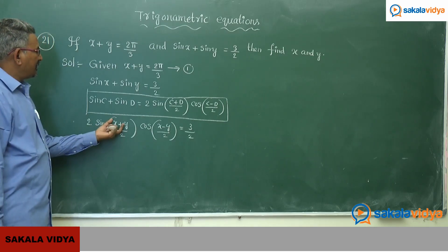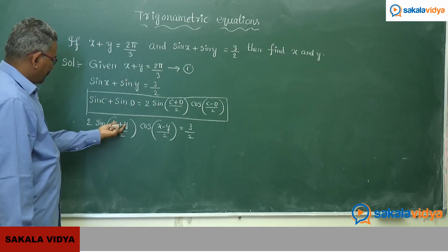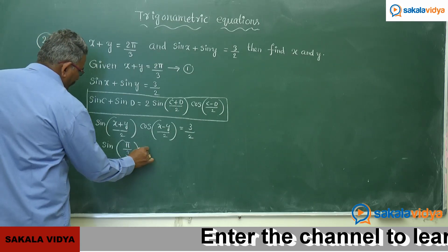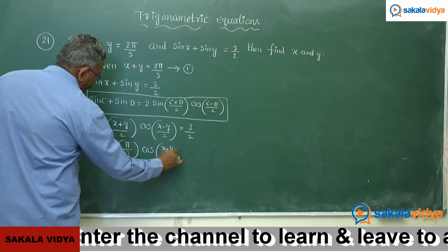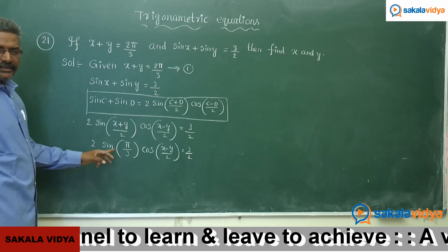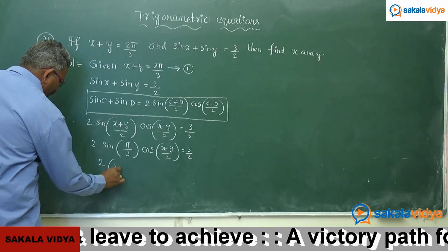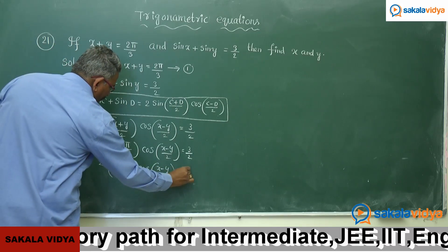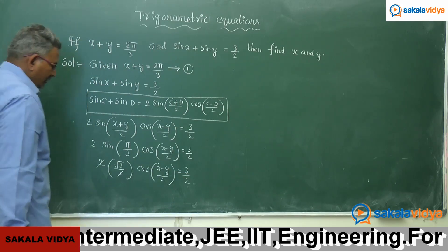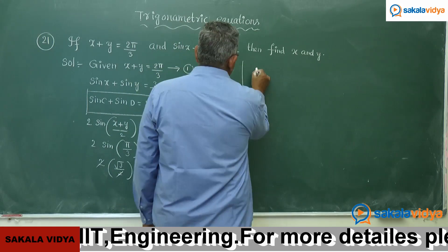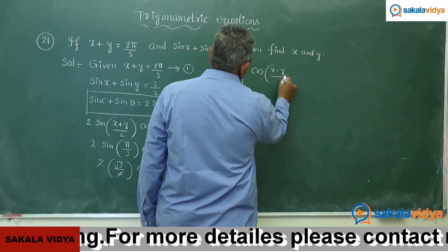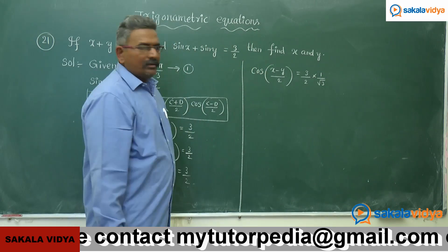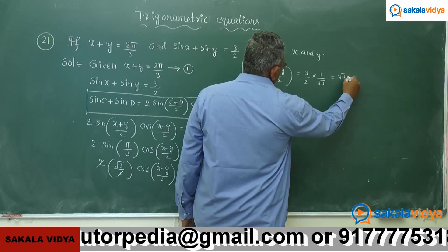Since x plus y equals 2π/3, we substitute: 2 sin(π/3) cos((x−y)/2) equals √3/2. Since sin 60° equals √3/2, this becomes 2 × (√3/2) × cos((x−y)/2) equals √3/2. The 2 and 2 cancel, giving √3/2 × cos((x−y)/2) equals √3/2. Multiplying both sides by 1/√3, since 3 equals √3 × √3, we get cos((x−y)/2) equals √3/2.